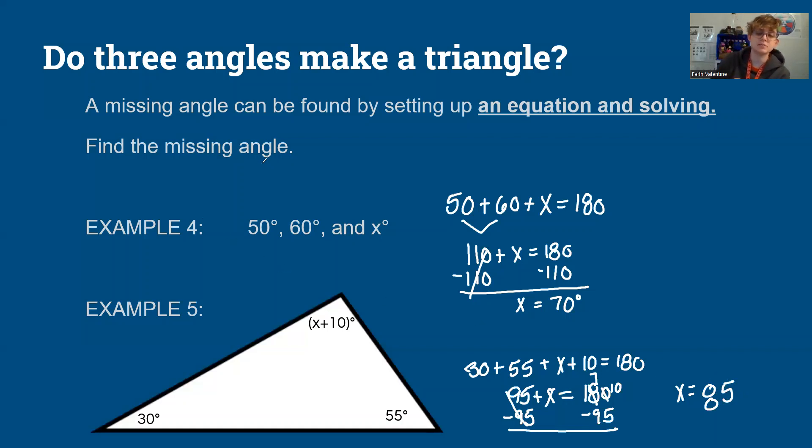Now I was asked to find the missing angle. So my angle is x plus 10 is the whole angle measure. So I'm going to say 85 plus 10, and that equals 95 degrees for my angle measure.